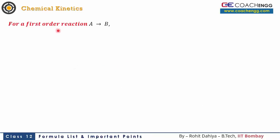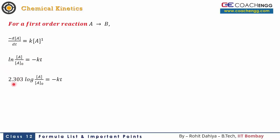Now let's discuss first order reactions separately. For first order reactions, −dA/dt = k[A]^1, meaning the rate is directly proportional to the concentration of the reactant. Integrating this equation gives: ln(A/A₀) = −kt, where A₀ is the initial concentration at t = 0 and A is the concentration at any time t. This can also be written as: 2.303 log₁₀(A/A₀) = −kt, or in exponential form: A = A₀ e^(−kt).